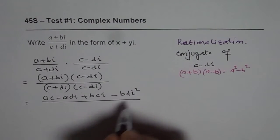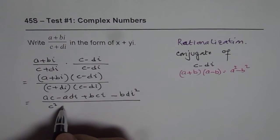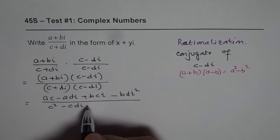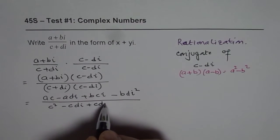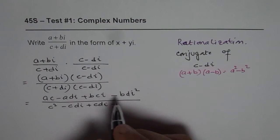And the denominator will be c square. C times di is minus cdi. Then multiplying by di, we get plus cdi. And here we get minus d square i square.